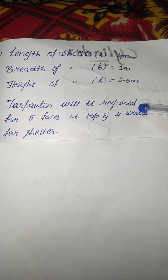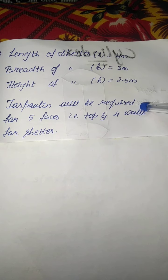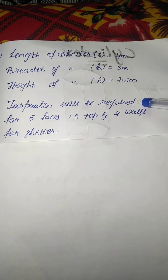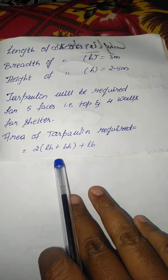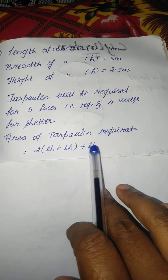So only 5 faces of your car will appear - now 5 faces including the top and 4 walls. What will be our formula? You know that 2 into (lh + bh) + lb.